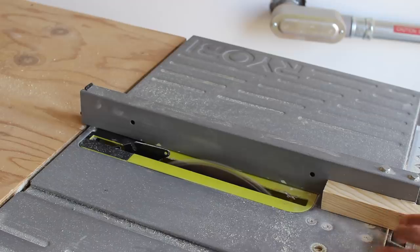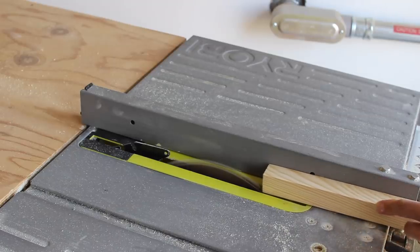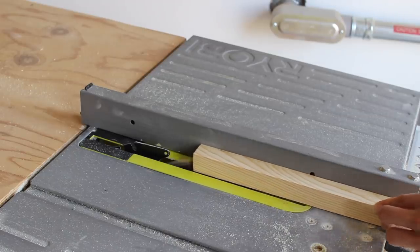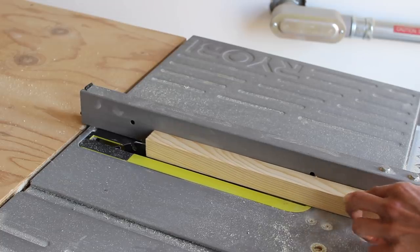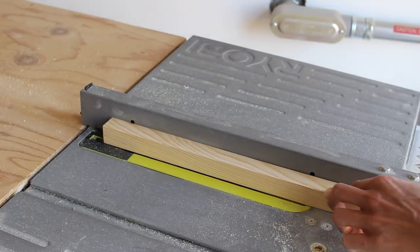So what I did was lower my table saw blade to be the thickness of that concrete. I found a piece of wood, like a trim piece of wood that I had on hand that happened to be the thickness of the concrete as well.